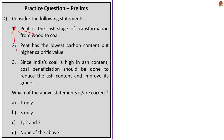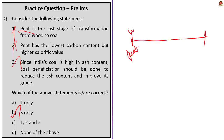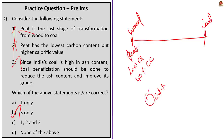The next question is about coal. Statement 1: Peat is the last stage of transformation from wood to coal. Statement 2: Peat has the lowest carbon content but higher calorific value. Statement 3: Since India's coal is high in ash content, coal beneficiation should be done to reduce ash content and improve its grade. The correct answer is option B — Statement 3 only. Peat is actually the first stage of transformation from wood to coal, and it has low calorific value and less than 40% carbon content, so Statements 1 and 2 are incorrect. Coal beneficiation is a process by which quality of raw coal is improved by reducing extraneous matter or associated ash.